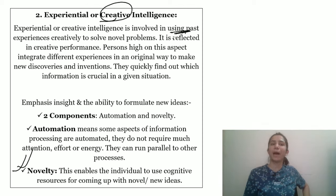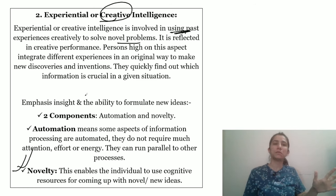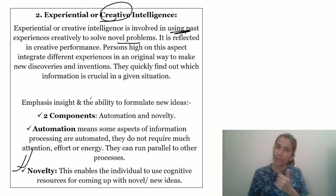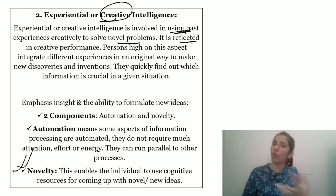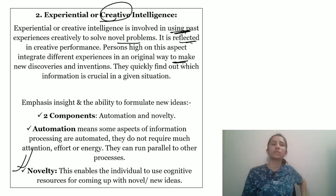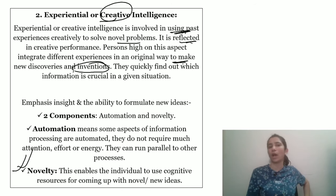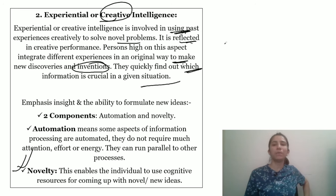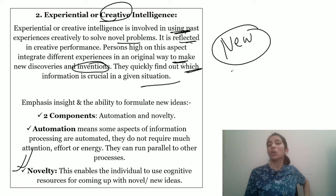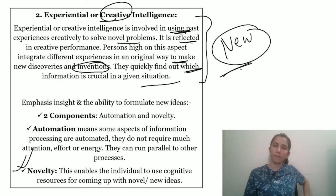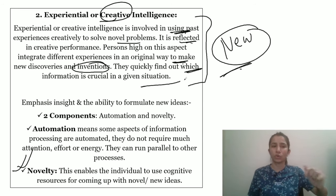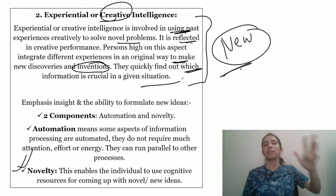Experiential Intelligence is involved in using past experiences creatively to solve novel problems. For solving new problems, you use new ideas. That reflects your creative intelligence. It is reflected in creative performance — it shows how original you are, making new discoveries and inventions. Creative means original and new. You can quickly find out which information is crucial in a given situation. If there is a new situation, creative intelligence lets you think of new ideas.